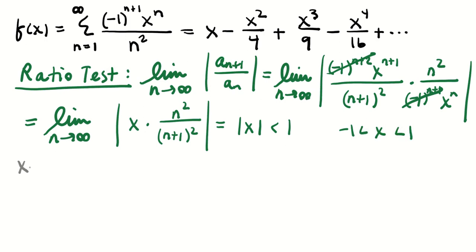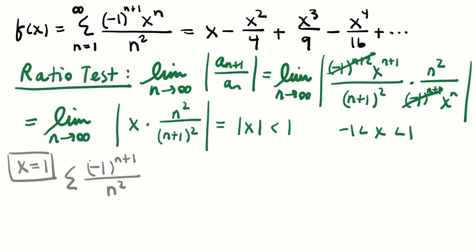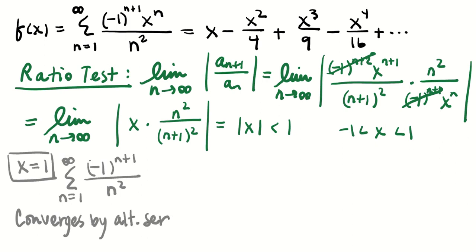At x = 1, we get the series ∑(−1)^(n+1)/n², which converges by the alternating series test: it alternates, 1/n² is decreasing, and the limit of the terms is 0.